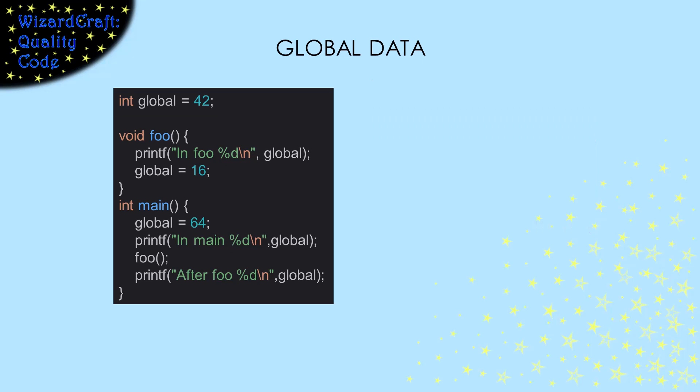In this example, I declared global outside either of my functions. Main gave it a value of 64 and then called foo. Foo printed that 64 and then set it to 16. And when we get back to main, main sees that 16. It's global because everyone can see it and everyone can change it.